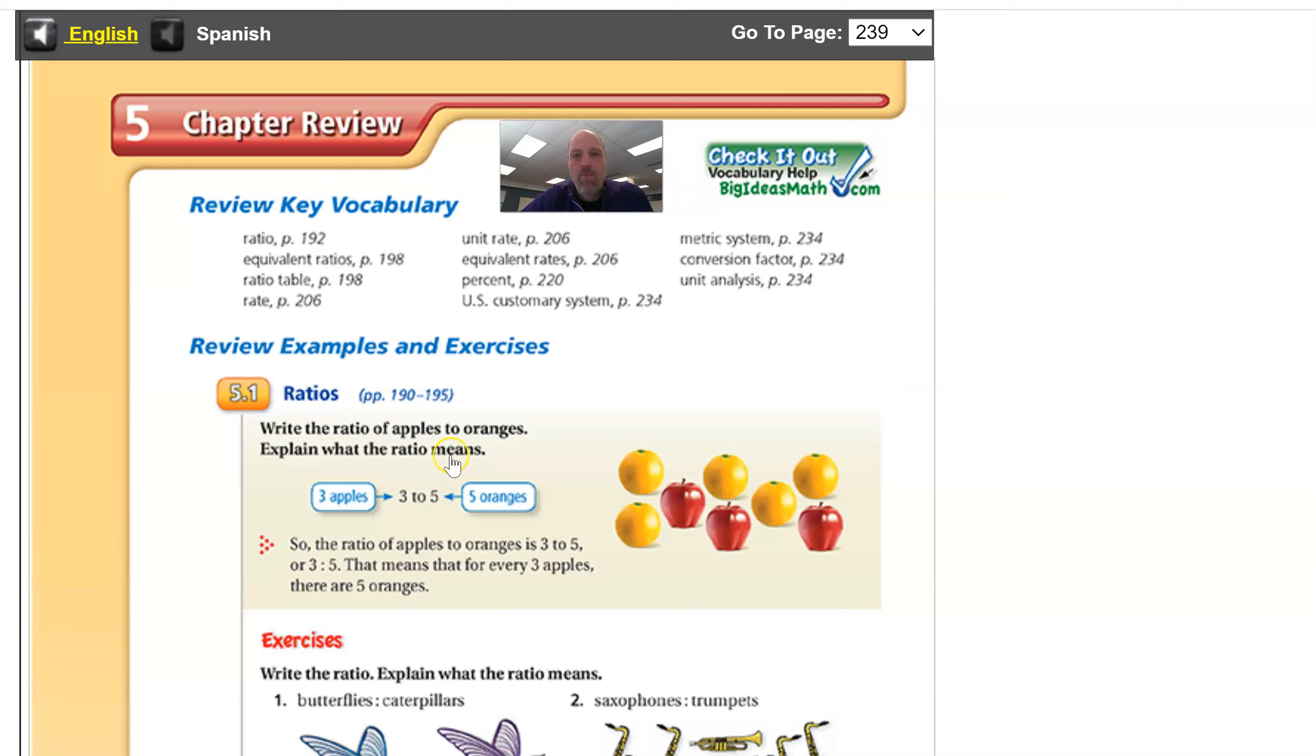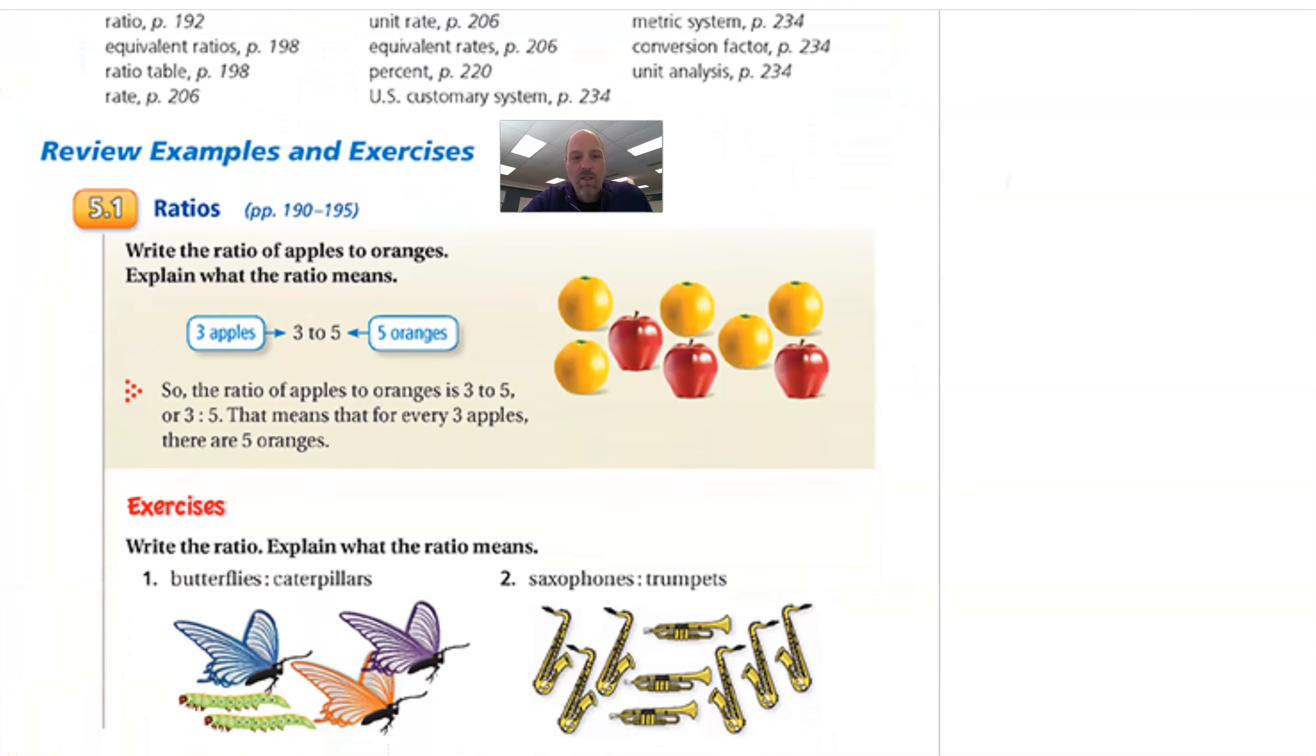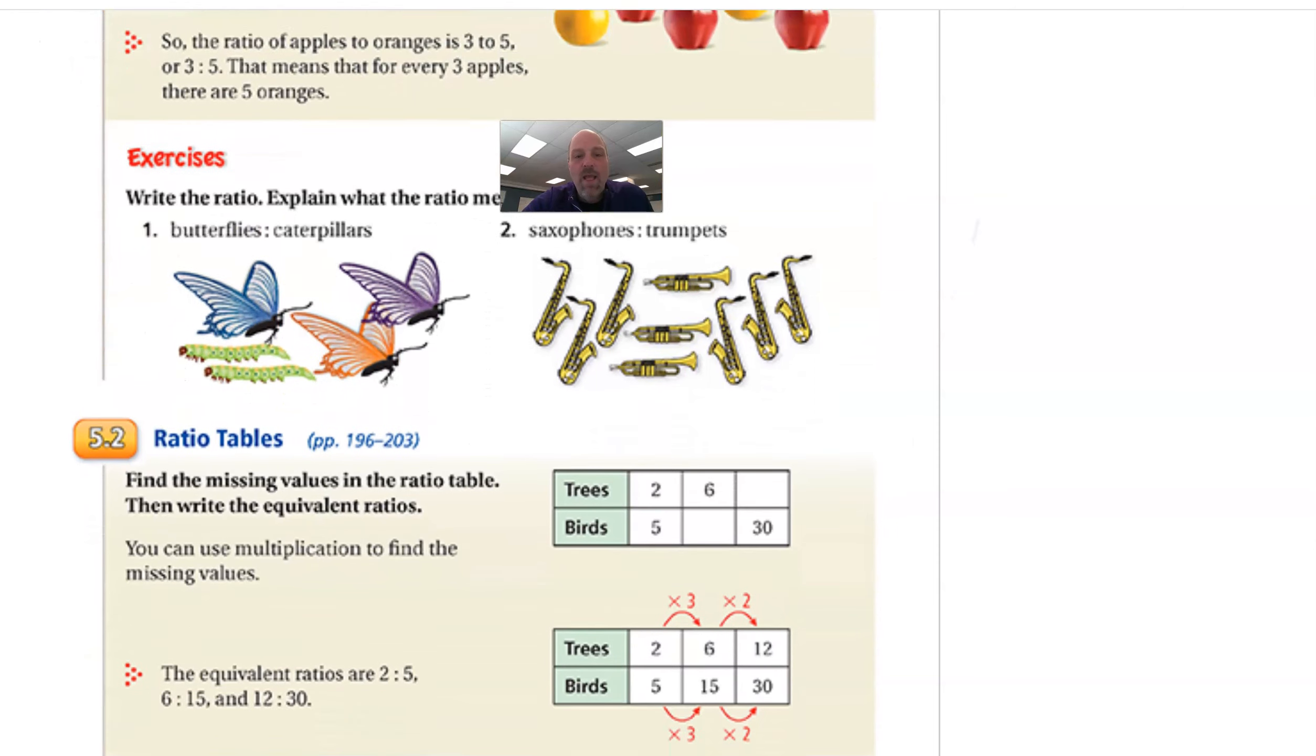You can see this is on page 239. Let me not give you a hint because they give you the hints. So they ask you problems like write the ratio, write the ratio of butterflies to caterpillars. It's counting. They tell you right up here, they show you, they give you the hints for each one. There's three apples to five oranges. It's three to five and you write it with a colon. So number one and two, you got to be able to count.